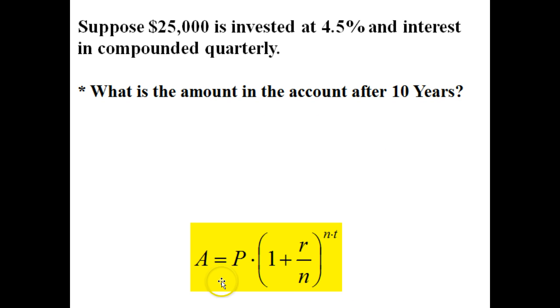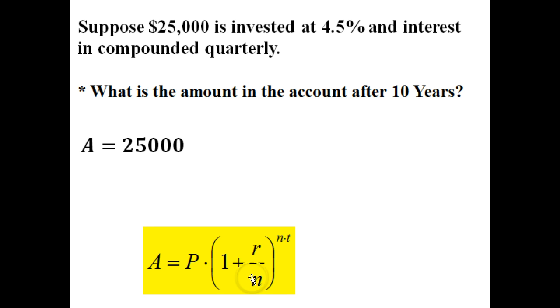So I take this and I just want to really just plug everything into our formula that we've got here. The first thing is P, that is our initial investment, that's $25,000. And then I'm just going to fill out the rest here.